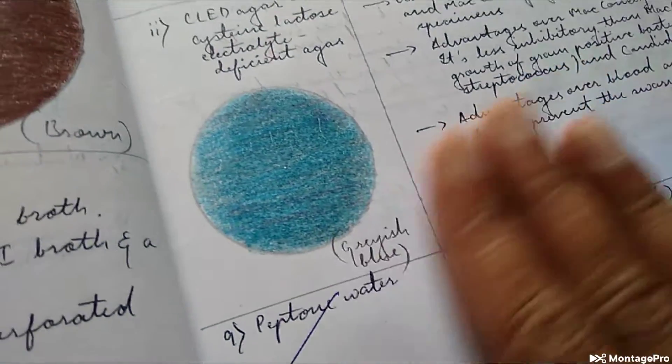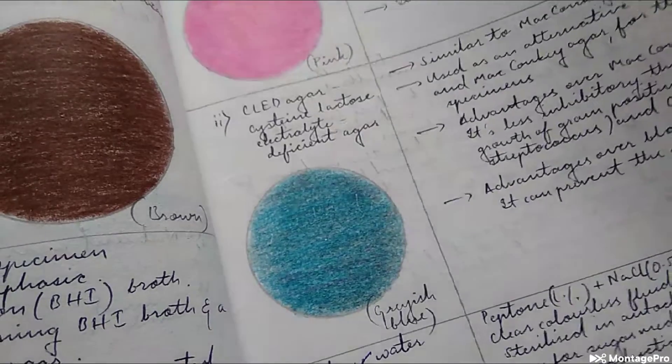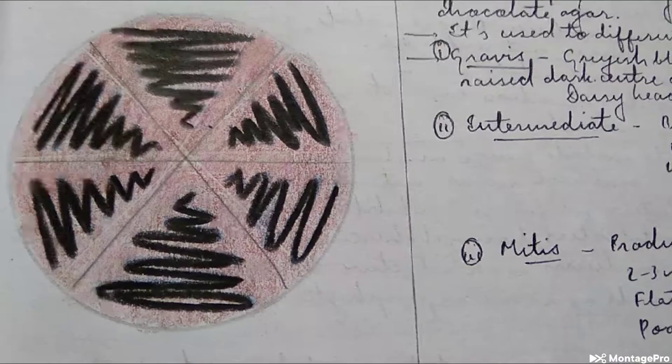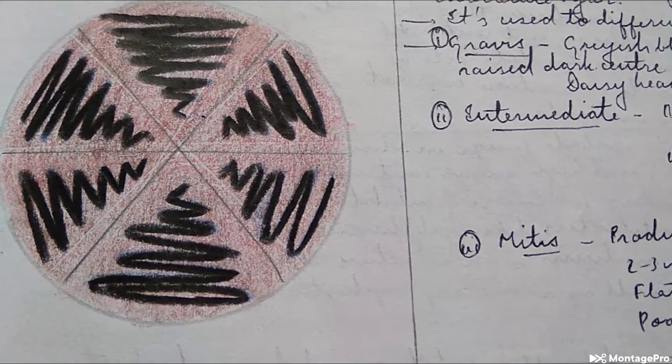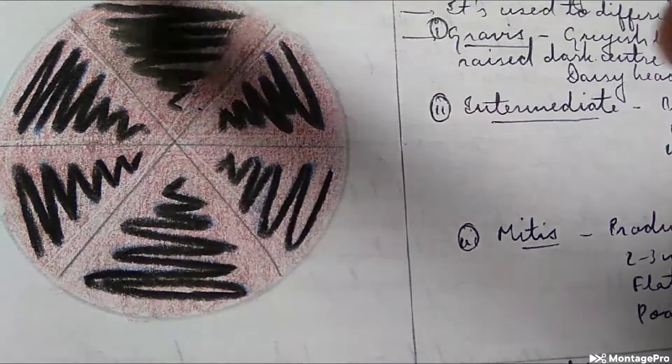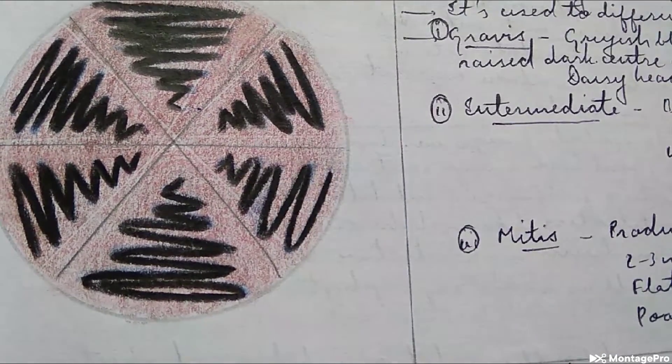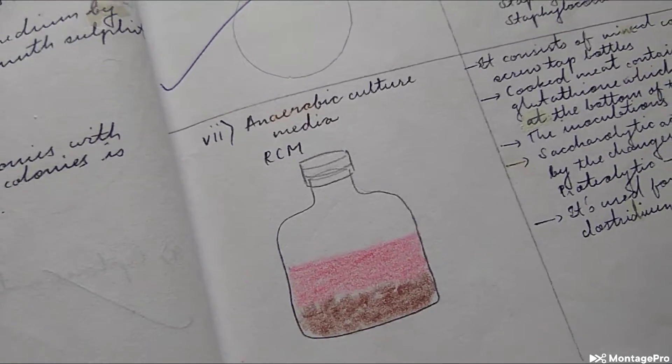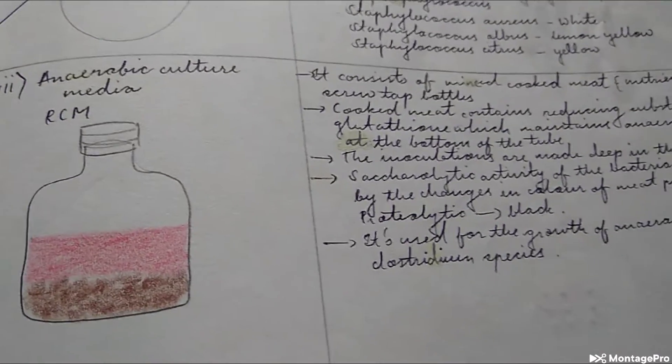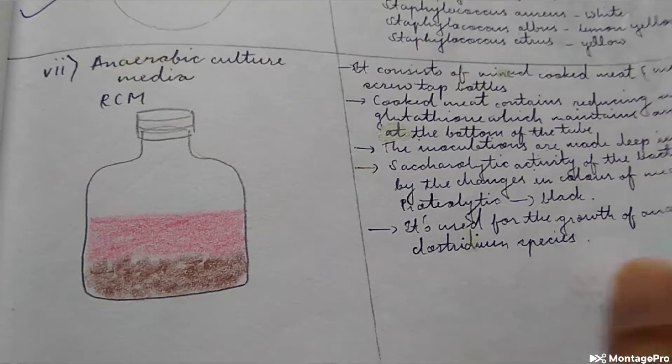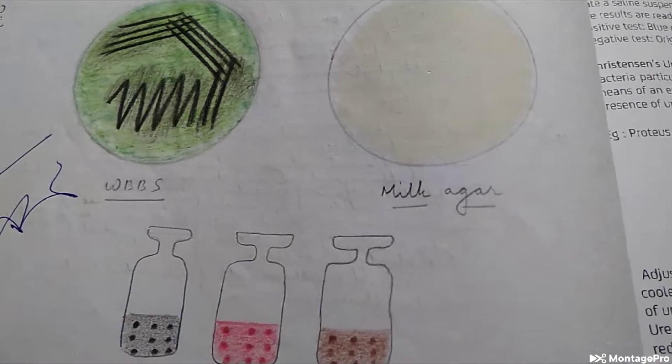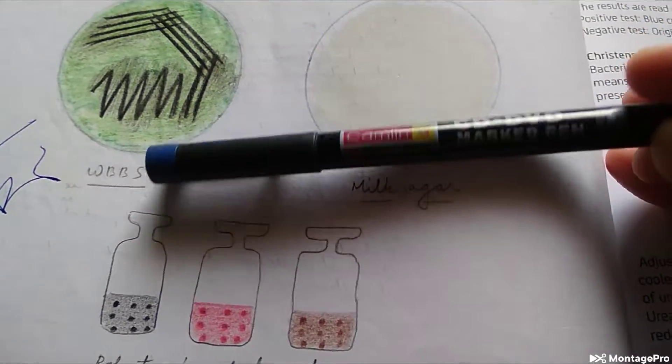This is your actual blood agar and then this is pink. We don't use such a pink MacConkey. Blue CLED agar - cysteine lactose electrolyte deficient agar. This is the potassium tellurite medium. What is this? This is anaerobic RCM broth, cooked meat, Robertson cooked meat broth. Yellow milk agar, light yellow kind of. What is this? Wilson Blair media.